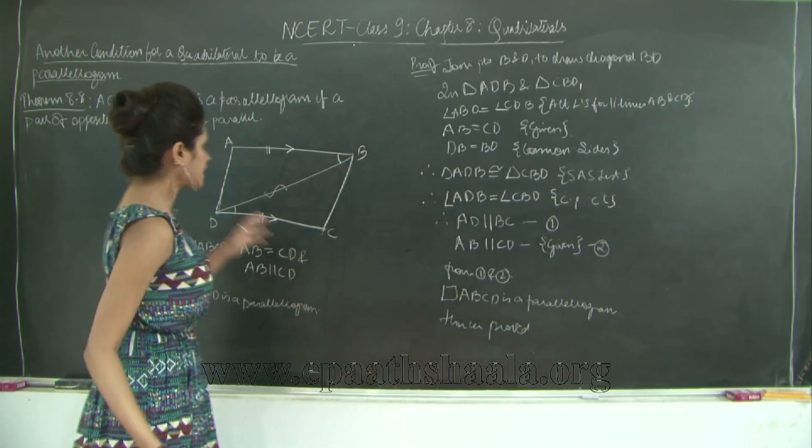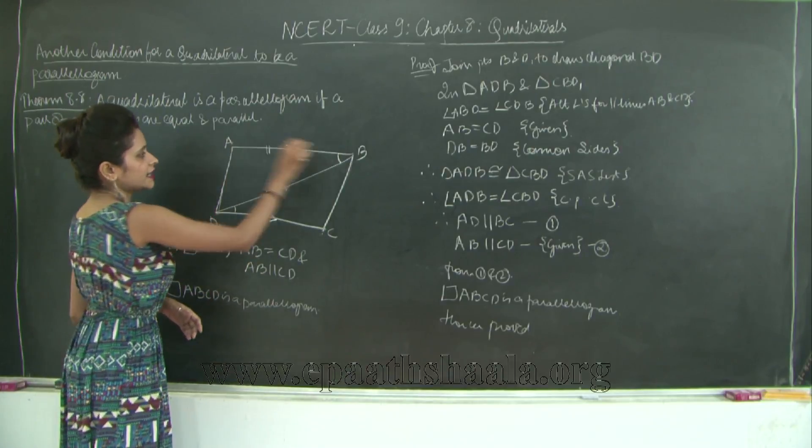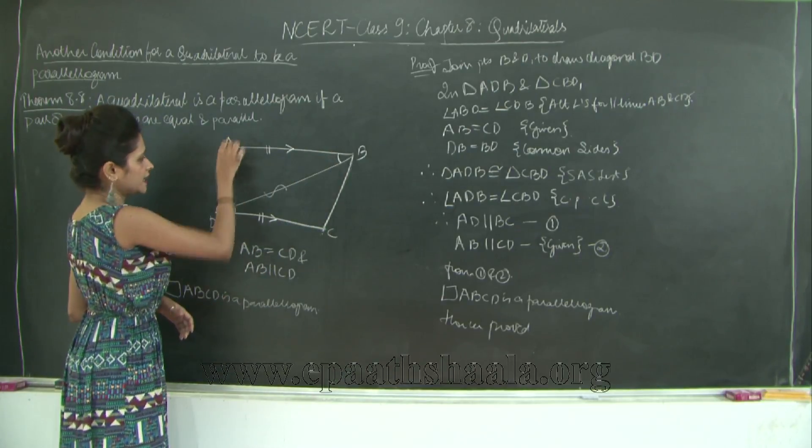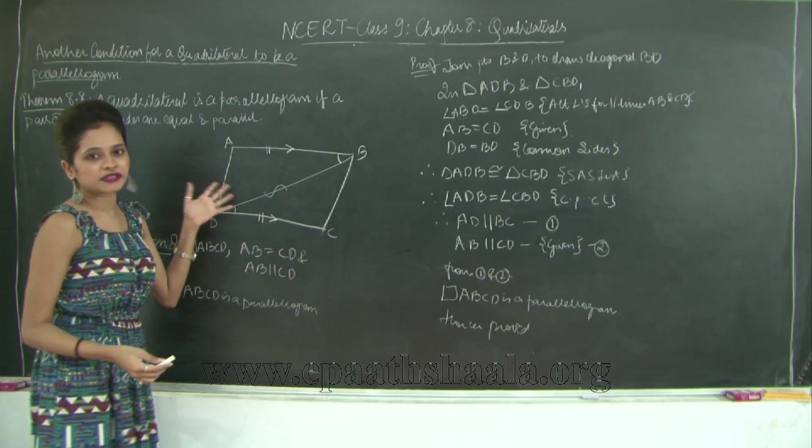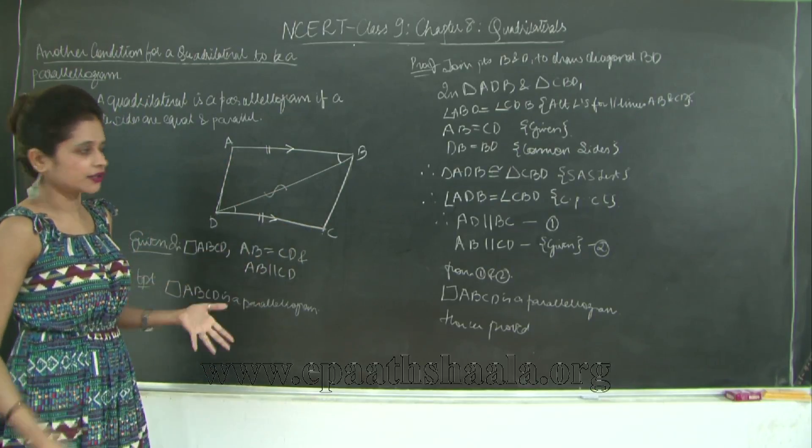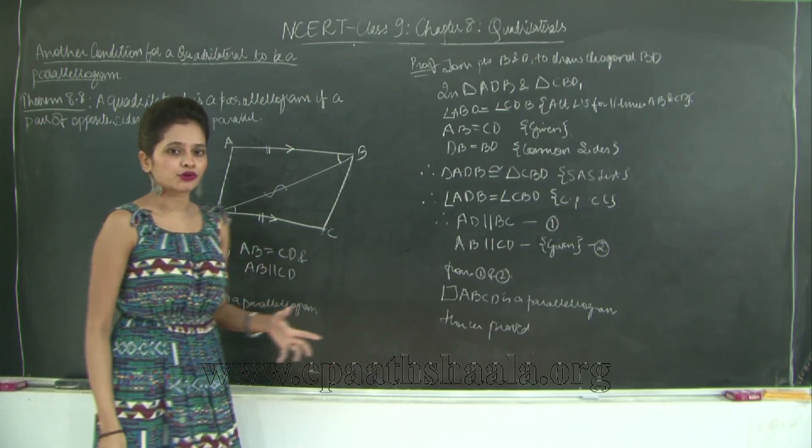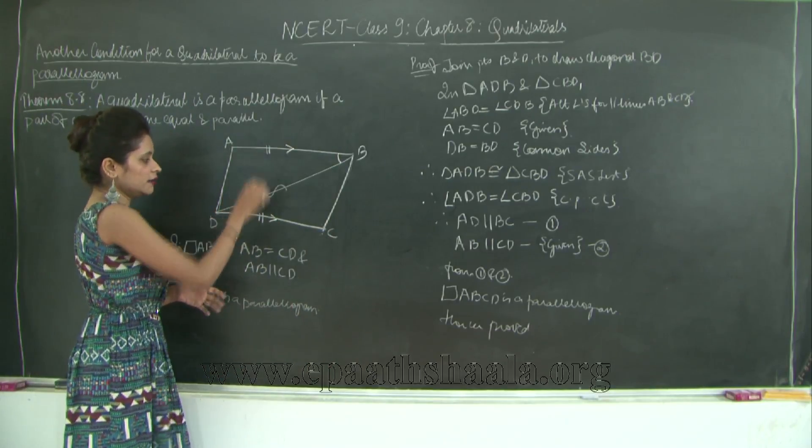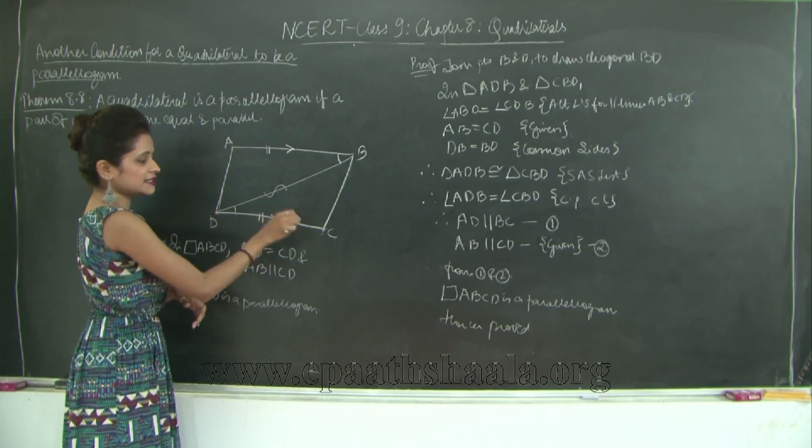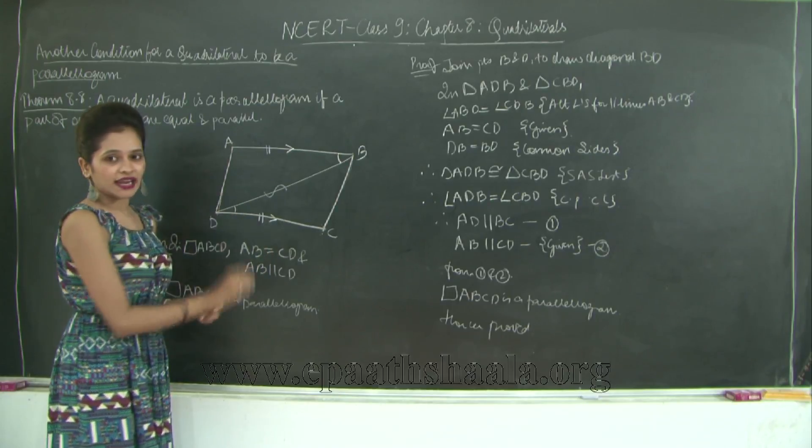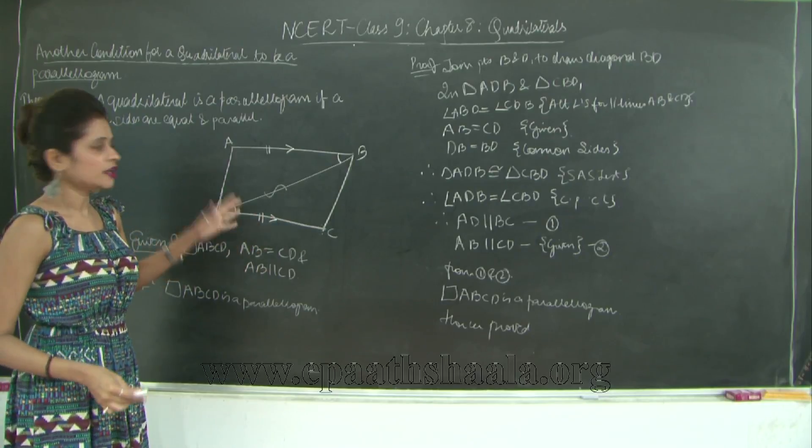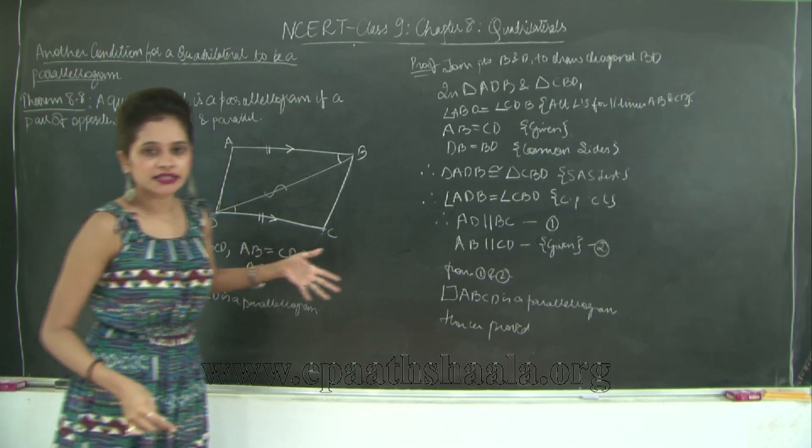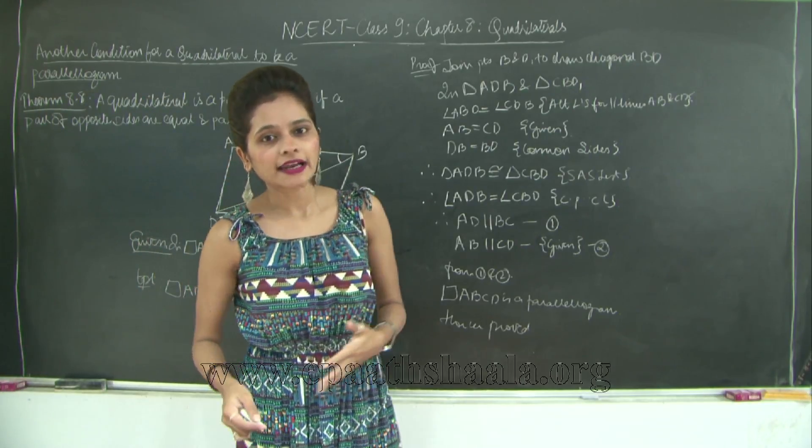Why? Because what we are getting in quadrilateral ABCD is that AB is parallel to CD and AD is parallel to BC. Therefore it is a parallelogram since the opposite sides are parallel to each other. Therefore it is sufficient to prove that given any pair of sides, let's say AB and CD, parallel as well as equal, you can simply say that the quadrilateral so formed, in our case quadrilateral ABCD, is a parallelogram.